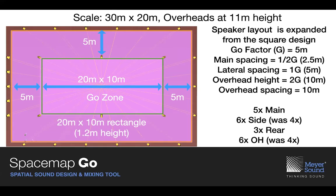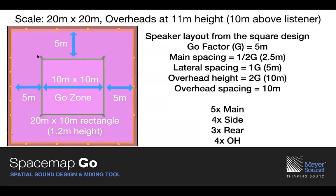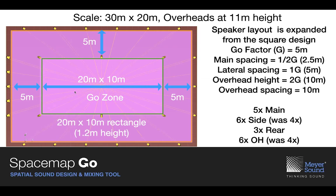Stretching the room to 30x20 gives a three-to-two ratio in the room and a two-to-one ratio in the go zone rectangle. For overheads, I'm back to a full 2G spacing — 10 meter spacing which is 2G — landing right on all corners. So we've got 2Gs in each direction, producing an oblong rectangulated trajectory for the overheads. We've also had to add another lateral on the sides because we added five more meters of room requiring five more meters of surround.